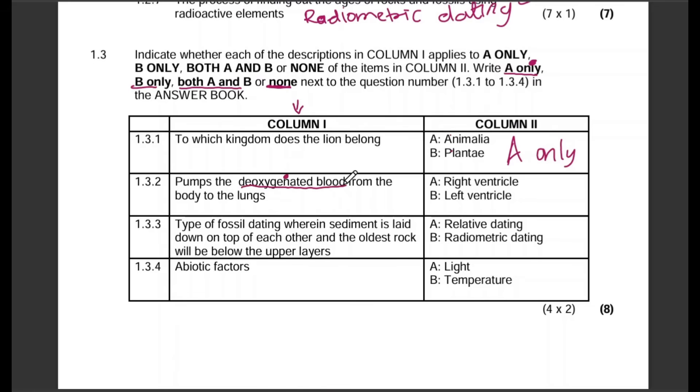So that is A, the right ventricle. Remember deoxygenated blood moves through the right side of the heart and the left side of the heart is for oxygenated blood. I don't like what it says here, 'from the body to the lungs.' It's supposed to say from the heart to the lungs, but anyways, A only. Question 1.3.3: Type of fossil dating wherein sediment is laid down on top of each other and the oldest rock will be below the upper layers. Is it relative dating or radiometric? That is relative dating, so the correct answer is A only because B is not correct.